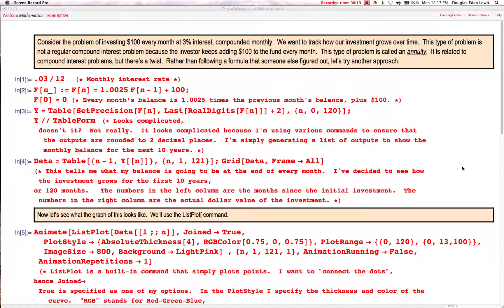We want to track how our investment grows over time. This type of problem is not a regular compound interest problem because the investor keeps adding $100 to the fund every month. This type of problem is called an annuity. It is related to compound interest problems, but there's a twist.